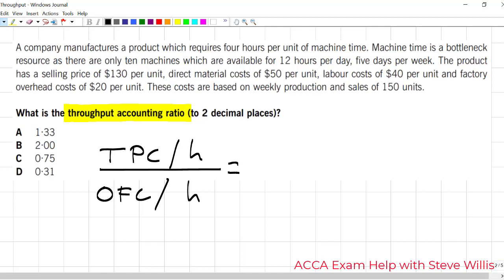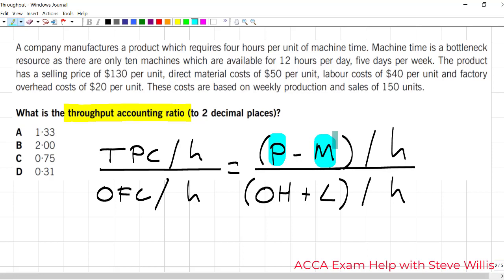Before we read the story, we turn this into a shopping list. We can drill down into both pieces of the formula. Throughput contribution is price minus direct materials divided by hours on the bottleneck. Other factory costs would be the factory overheads divided by hours of bottleneck time. That helps me make a shopping list before I read that story. I need price, materials, time on the bottleneck, overheads, labor, and then the total hours.